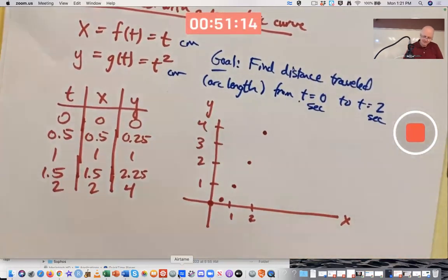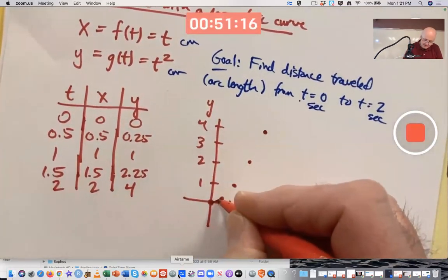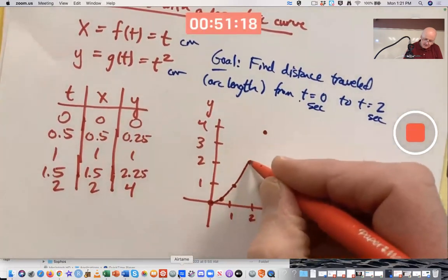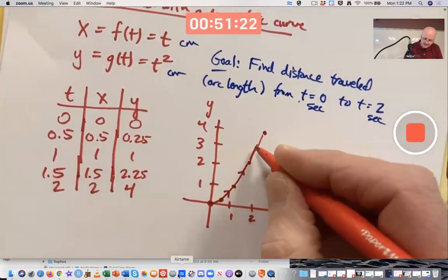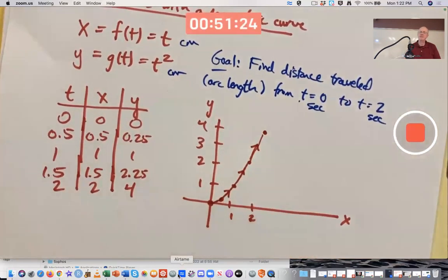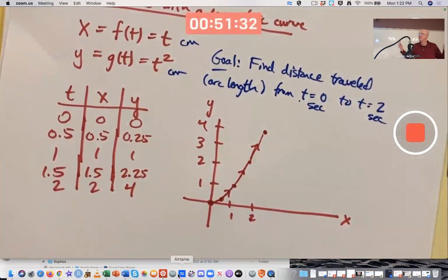Then connect the dots with a smooth curve. And also draw arrows on the curve indicating the direction of motion as time increases. In this case, the motion is from lower left to upper right, but it could have been the opposite way. It could be leftward or downward motion.